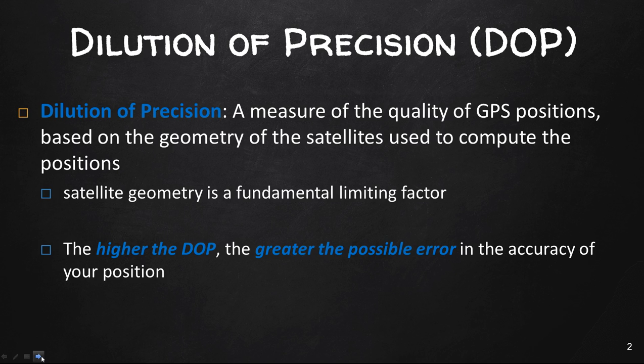The Dilution of Precision is a measure of the quality of GPS positions, based on the geometry of the satellites used to compute the positioning. Satellite geometry is a fundamental limiting factor. The higher the DOP, the greater the possible error in the accuracy of your positioning.